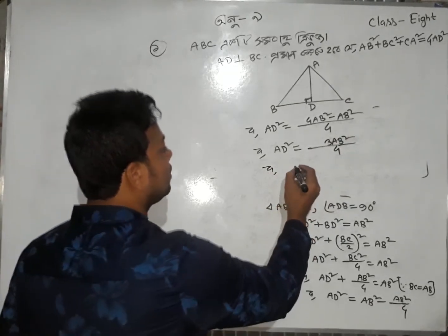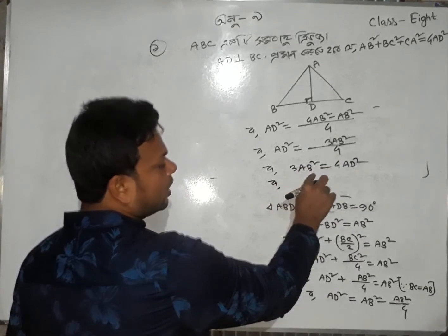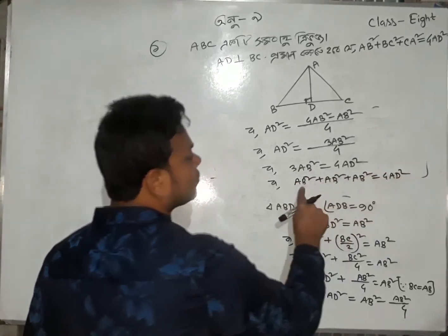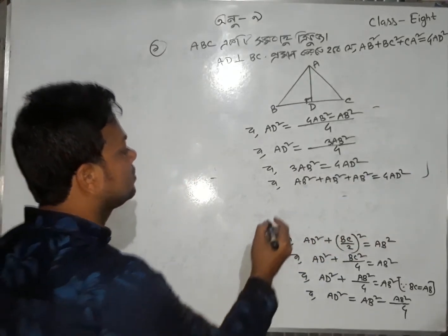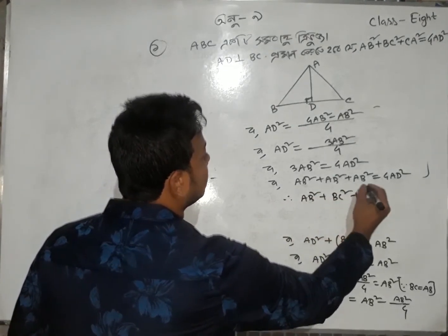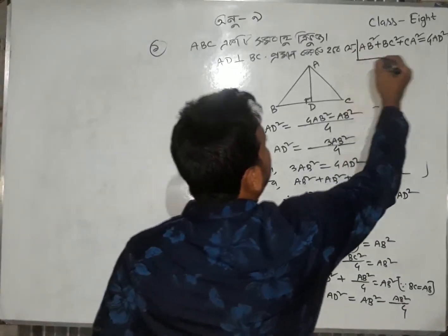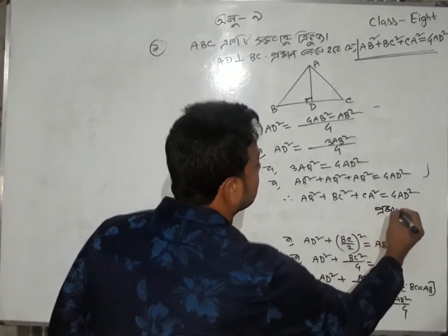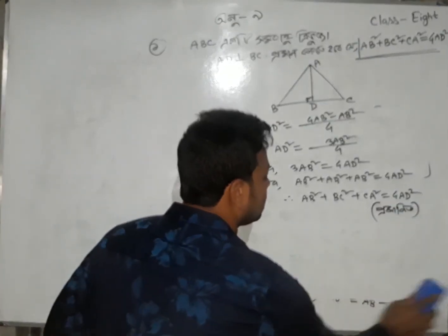Since it is an equilateral triangle, 3AB square equals 4AD square. Therefore AB square plus BC square plus CA square equals 4AD square. Since AB square equals BC square equals CA square, adding them: AB square plus BC square plus CA square equals 3AB square equals 4AD square. Hence proved: AB square plus BC square plus CA square equal to 4AD square.